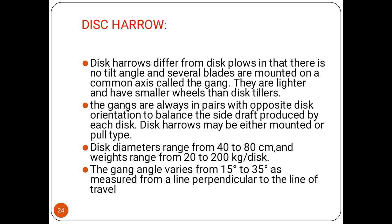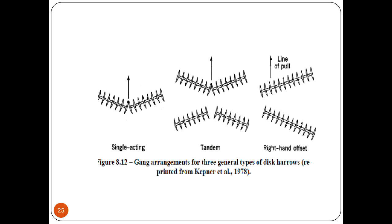The gangs are always in pairs with opposite disk orientation to balance the side draft produced by each disk. The disk harrow may be either mounted or trail type. The disk diameter ranges from 40 to 80 centimeters and weight ranges from 20 to 200 kg per disk. The gang angle varies from 15 to 35 degrees as measured from the line perpendicular to the line of travel. This covers single action, tandem, and right-hand offset types.